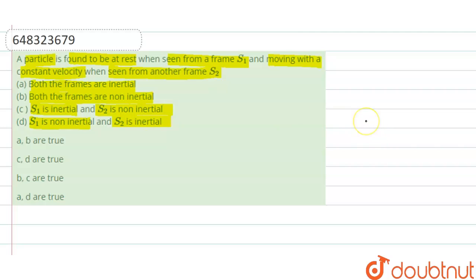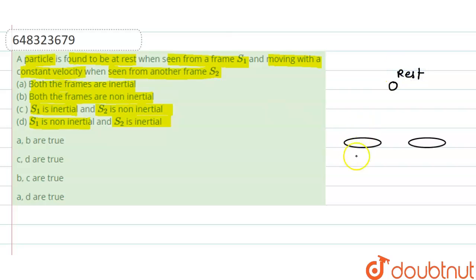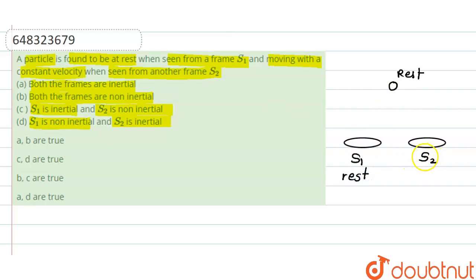We will draw two frames. Suppose there is a first frame and a second frame, and the particle to be observed is at a certain position. Initially, we consider this particle to be at rest. The S1 frame is here and the S2 frame is here. When we observe from S1, the particle is at rest, which means this frame must also be at rest.